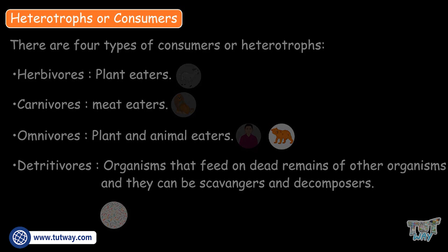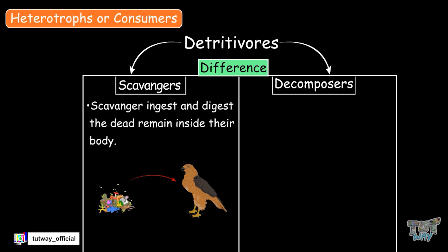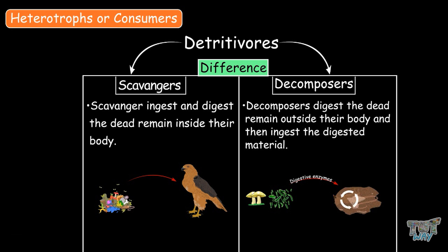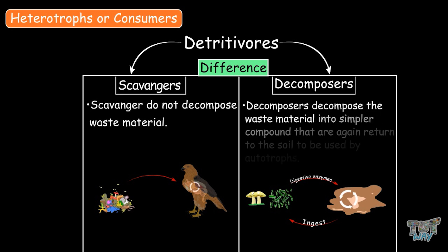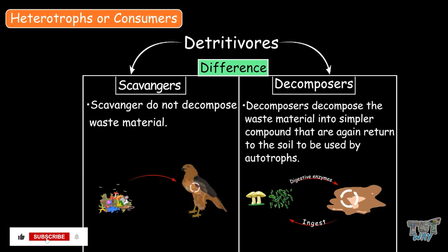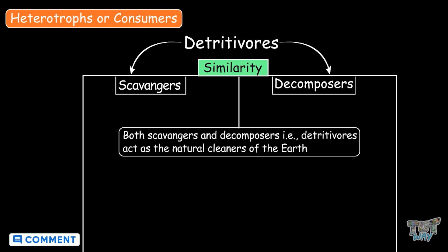The main difference between scavengers and decomposers is that scavengers ingest and digest the dead remains inside their body, while decomposers digest the dead remains outside their body and then ingest the digested material. Scavengers do not decompose waste material, but decomposers decompose it into smaller compounds that are returned to the soil to be used by autotrophs. Both scavengers and decomposers, as in detritivores, act as the natural cleaners of the earth.